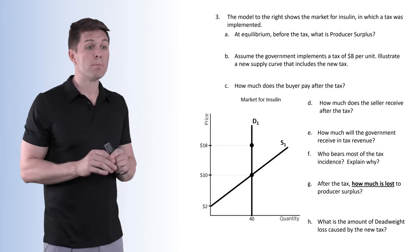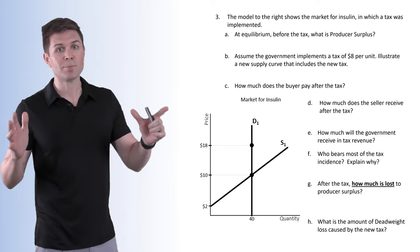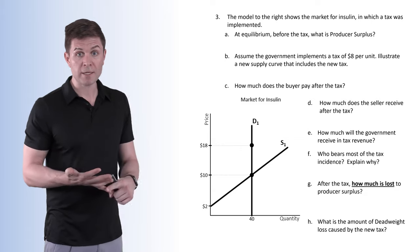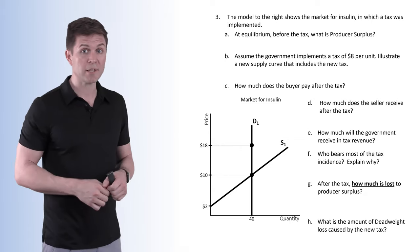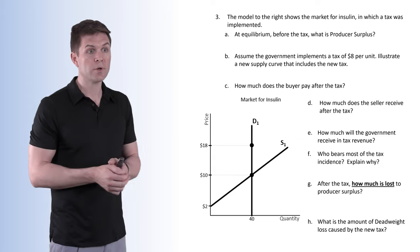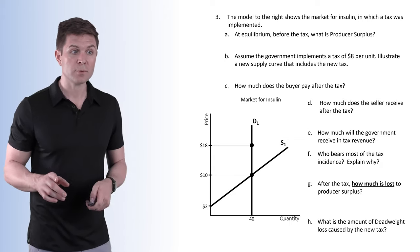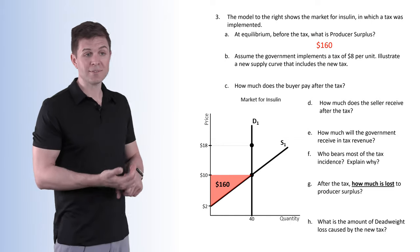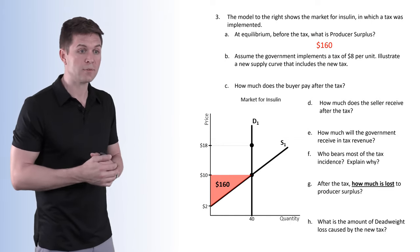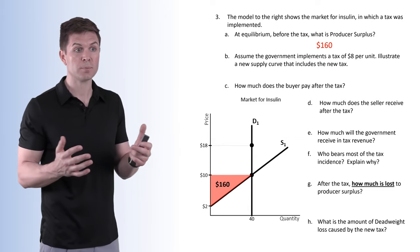Number three: the model shows the market for insulin — a stereotypical example of perfectly inelastic demand. We have a perfectly inelastic demand curve — that vertical curve — and an upward-sloping supply curve. At equilibrium before the tax, what is producer surplus? Our equilibrium price is $10, making our producer surplus $160. Everything below the price but above the supply curve gives us producer surplus.